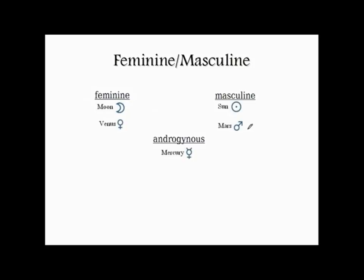The masculine planets are about our ambitions. The Moon and Venus are more about feeling, awareness, perception and response. Mercury is androgynous — quite unique in that way. Mercury can engage with everything, but its only real attribute is that it is versatile and clever. In the planetary family, the Sun and Moon would be the father and mother, the king and queen.